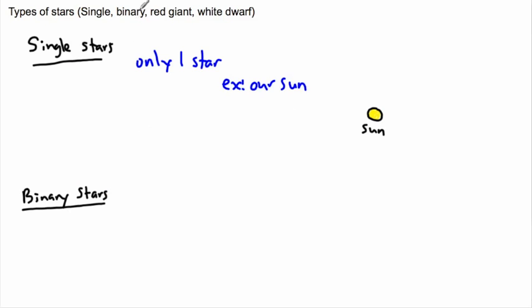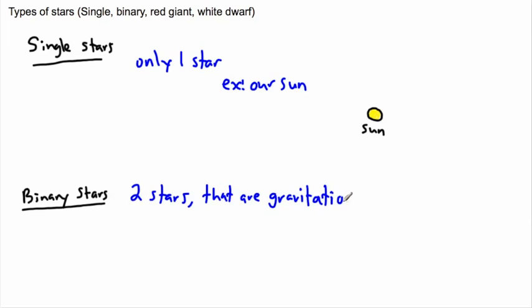If something is a binary — 'bi' means two — so if a system of stars is called a binary, that means we have two stars that are gravitationally bound. They orbit each other.